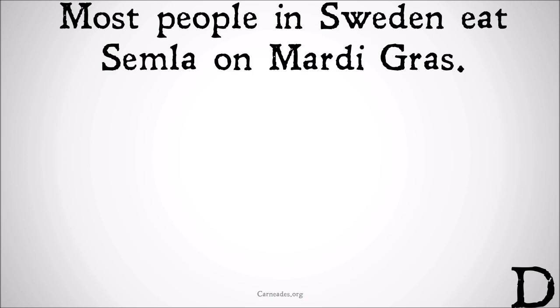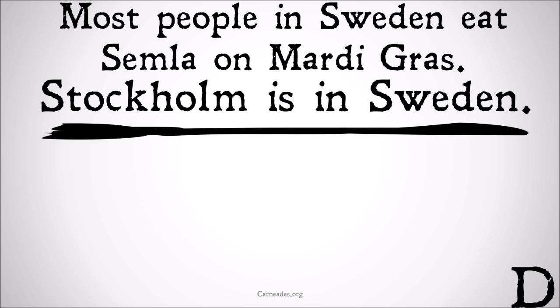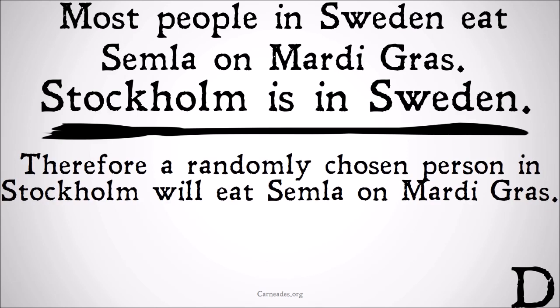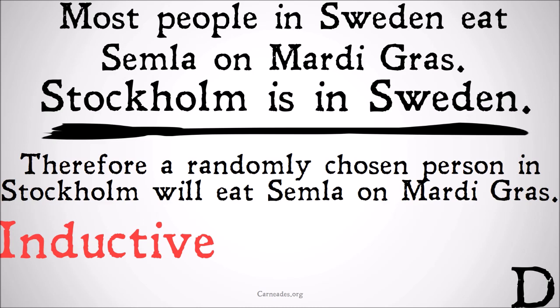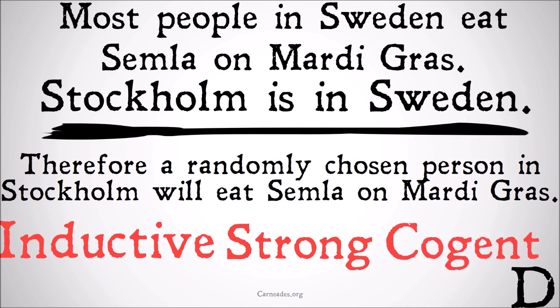For example: most people in Sweden eat semla on Mardi Gras; Stockholm is in Sweden; therefore, a randomly chosen person in Stockholm will eat semla on Mardi Gras. This isn't certain because we're saying most people, not all. So it's inductive and strong — because if the premises were true, the conclusion would be more likely — and it's cogent, because in fact the premises are true.